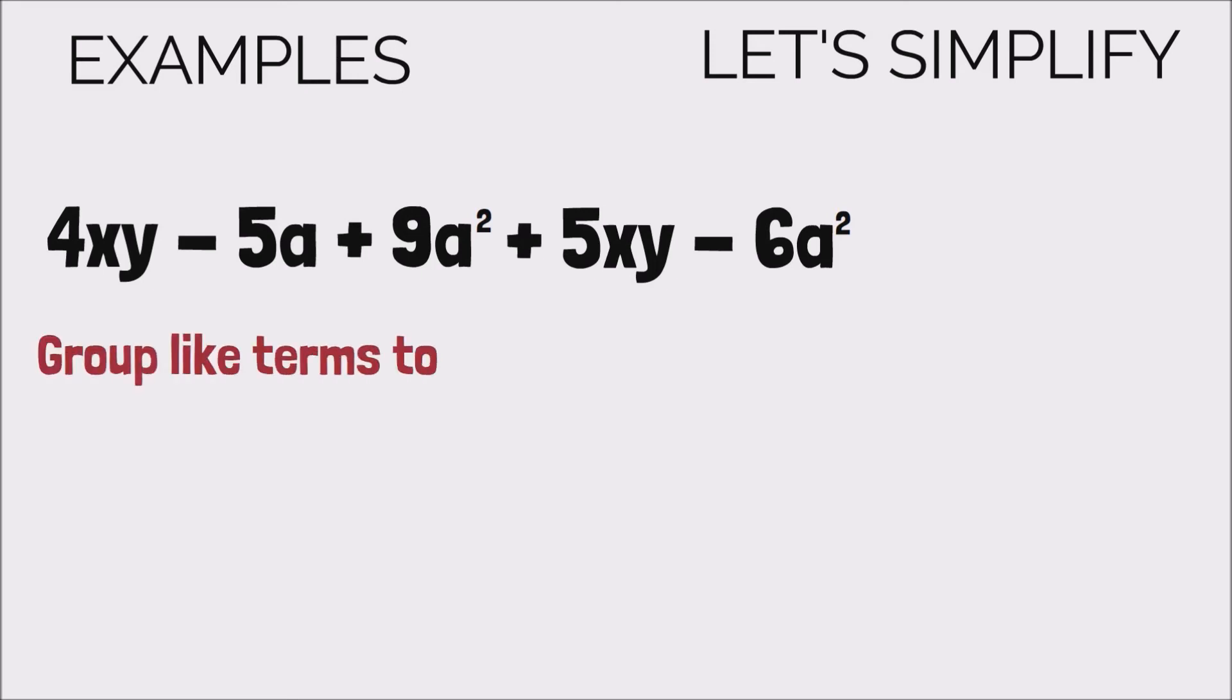And the first one, like I said before, is that we're gonna group our like terms together. So I'm seeing some like terms: I'm seeing xy, I'm seeing a, and I'm seeing a squared. These are all different terms. Remember that they're only like, or alike, if they look the exact same, right? So let's group all of those like terms together.